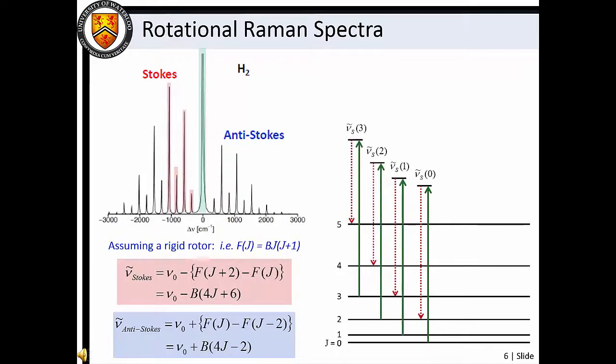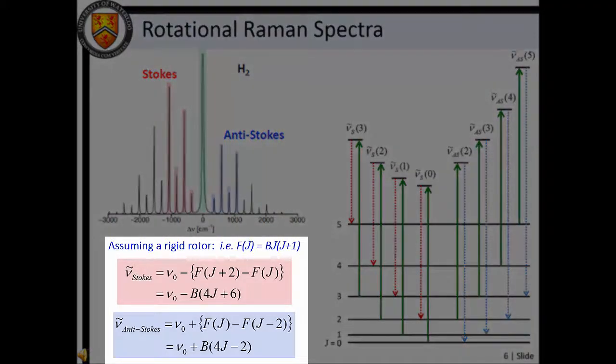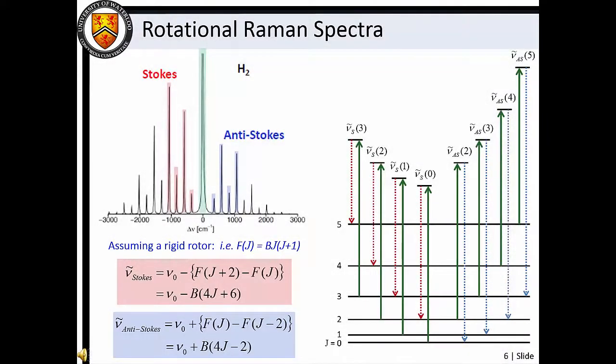If the molecule loses energy, the scattered photon is raised in energy by that amount. These are the anti-Stokes lines. Since we know that Δj must equal plus or minus two, we can use our expression for rotational energies to produce an expression for rotational Stokes and anti-Stokes transitions.